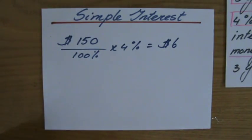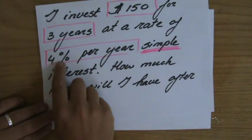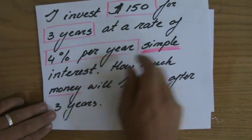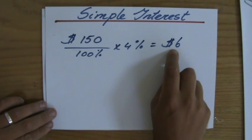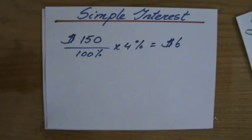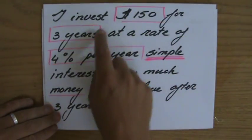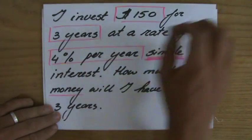So every year - if I return to the question, I get 4% per year - the bank is giving me $6. For how long? For how many years? They're giving me that for three years because I'm leaving my money in my account for three years.